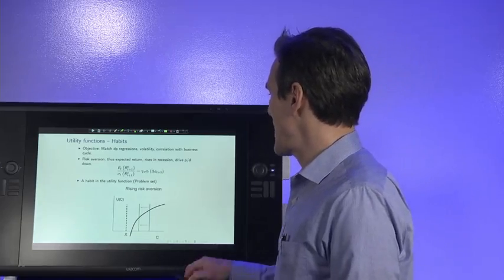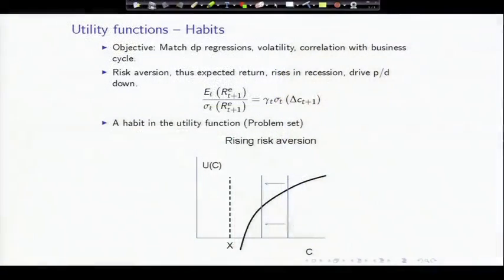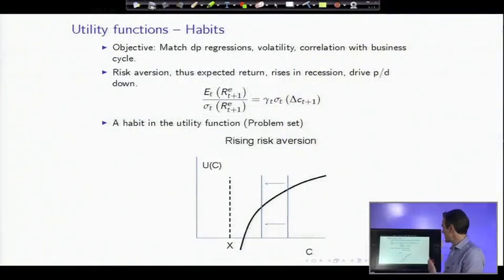The objective here is to match things like the dividend yield regressions, the forecast excess returns, the volatility, and the correlation with business cycles, the fact that prices are low in recessions.